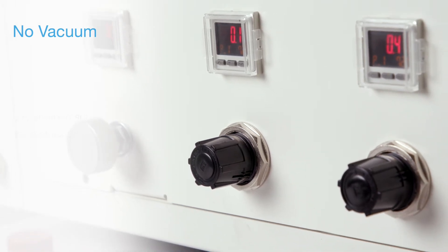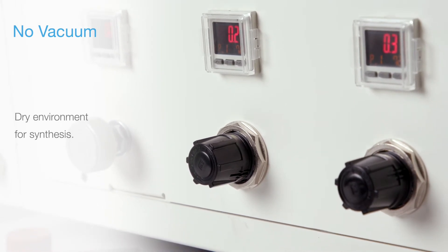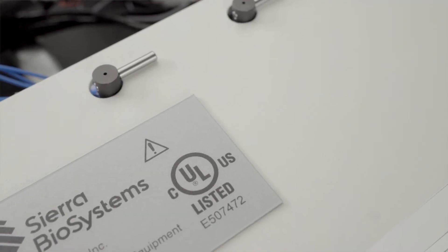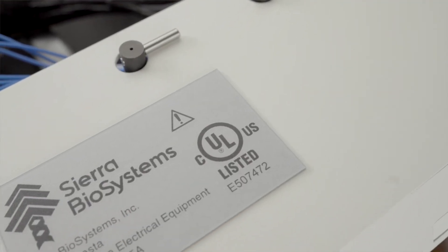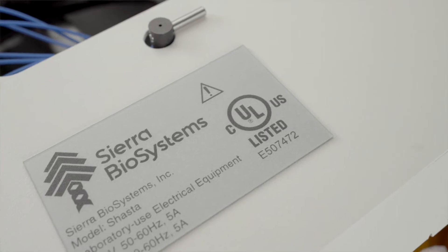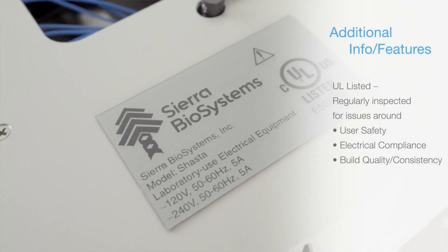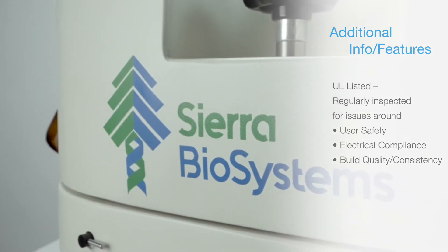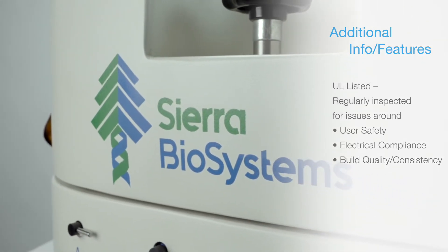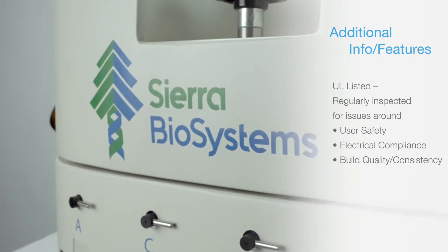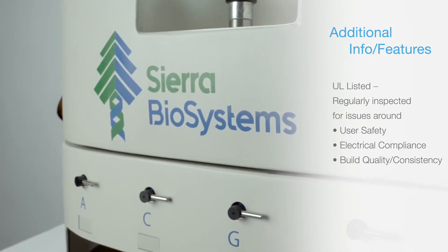This gives us the secondary benefit of creating a drier environment throughout the run. Our Shastas are also fully compliant with all of UL's current laboratory safety requirements, meaning our machines have been tested and are regularly inspected by UL's practitioners who check for issues concerning user safety, electrical compliance, and build quality and consistency.